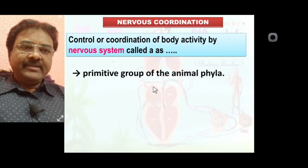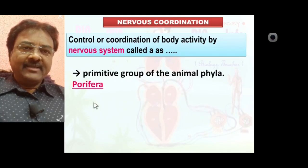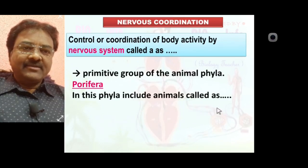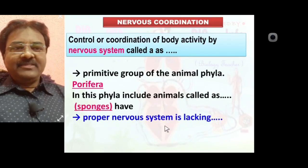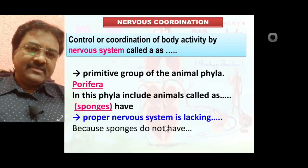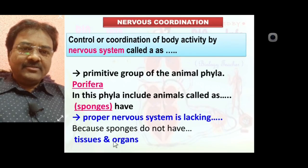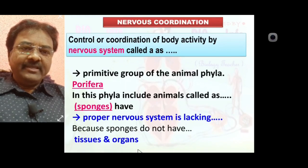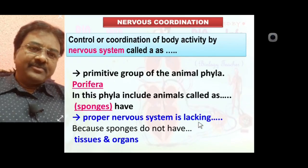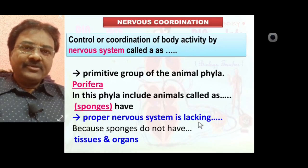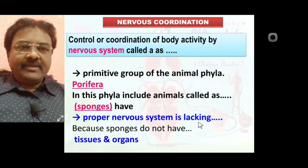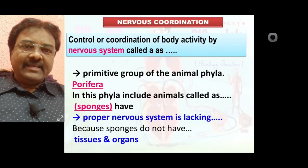In the primitive group of animals in phylum Porifera — the first primitive phylum — the animals included are called sponges. A proper nervous system is lacking or absent because sponges do not have tissue and organs; their body is only at the cellular grade of organization. So no tissue and organs are formed in sponges, and a proper nervous system is absent in Porifera.